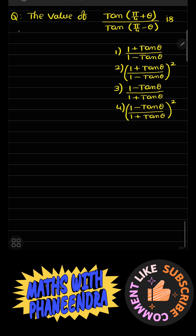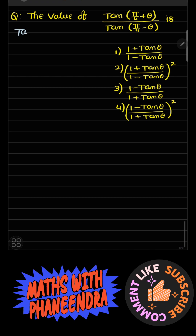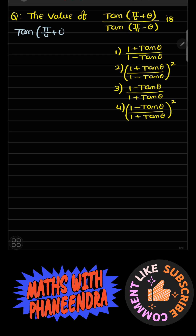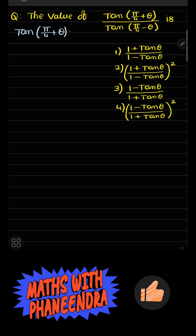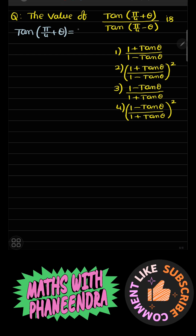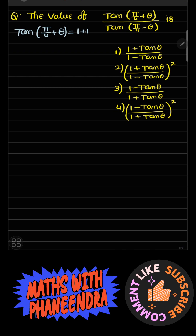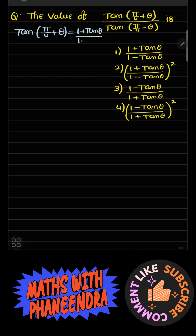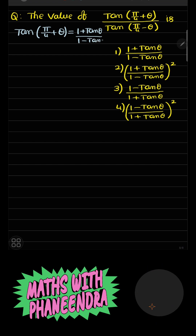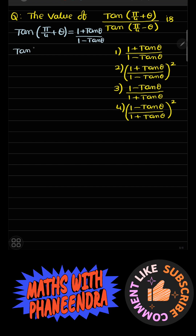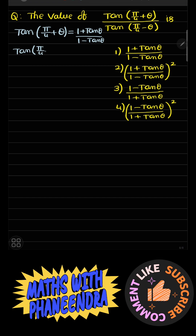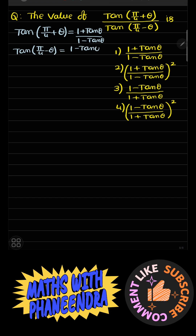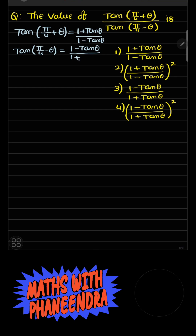So first we have to write the values of tan(π/4 + θ) and tan(π/4 − θ). Tan(π/4 + θ) is equal to 1 plus tan θ divided by 1 minus tan θ. Similarly, tan(π/4 − θ) is equal to 1 minus tan θ divided by 1 plus tan θ.